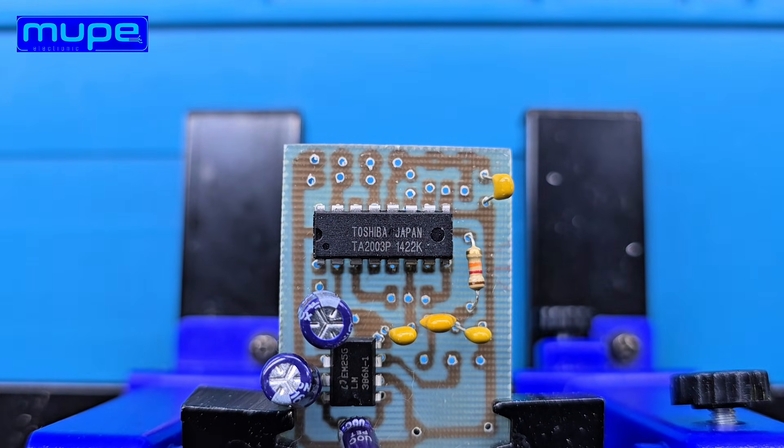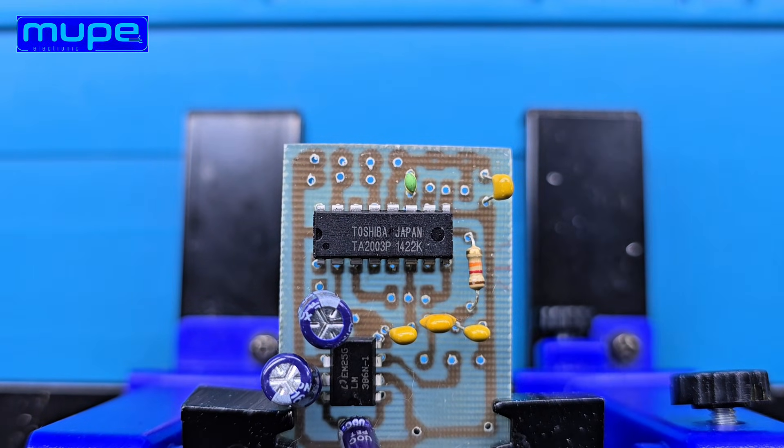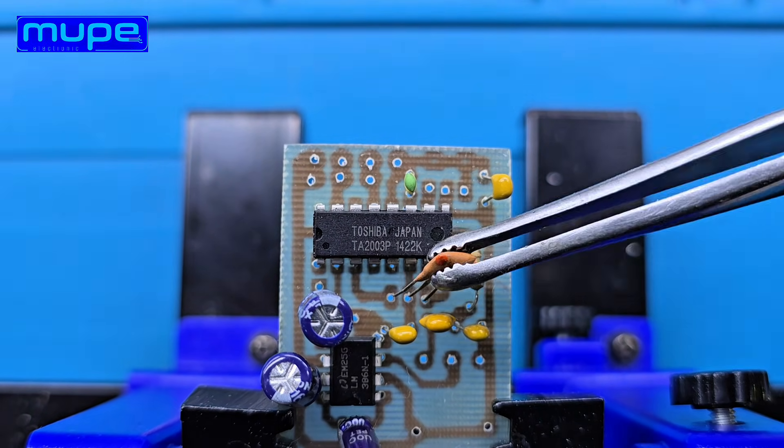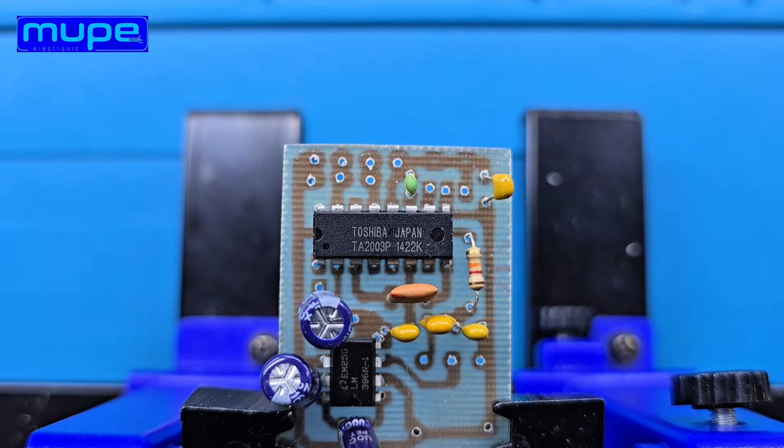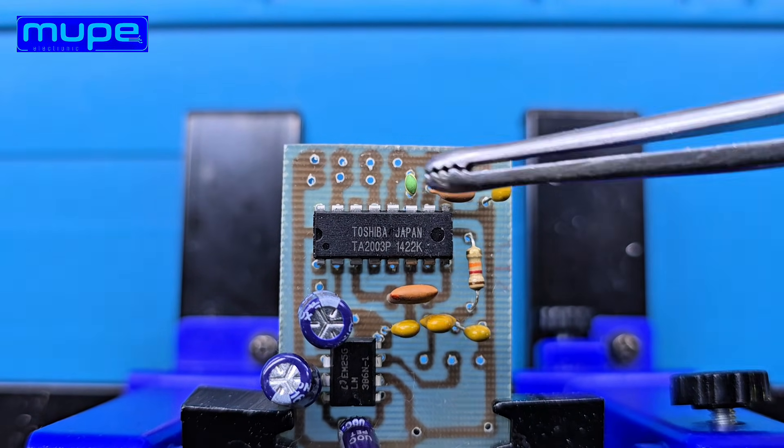For the audio output, I added an LM386. Both the TA2003 and the LM386 run smoothly on just 4 to 5 volts. So with three small batteries, you get a fully functional low power radio.